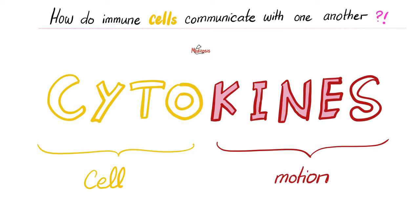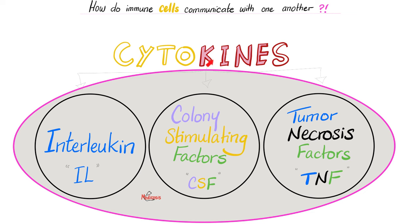How do your immune cells, such as the lymphocytes, communicate with each other? They release cytokines. What does cytokines mean? 'Cyto' means cell, because they are cells talking to each other. 'Kines' comes from kinetic motion — they are secreting chemicals to put these cells in motion.